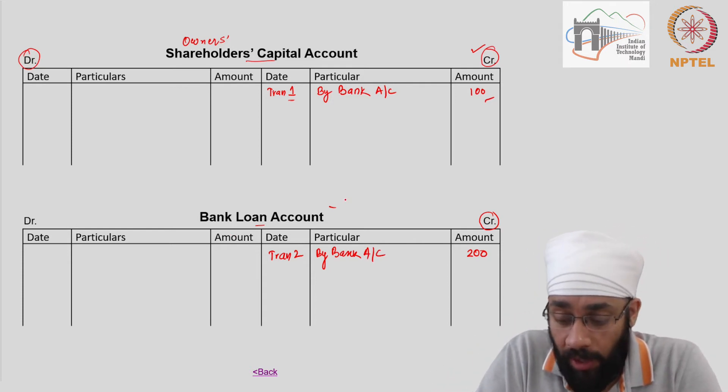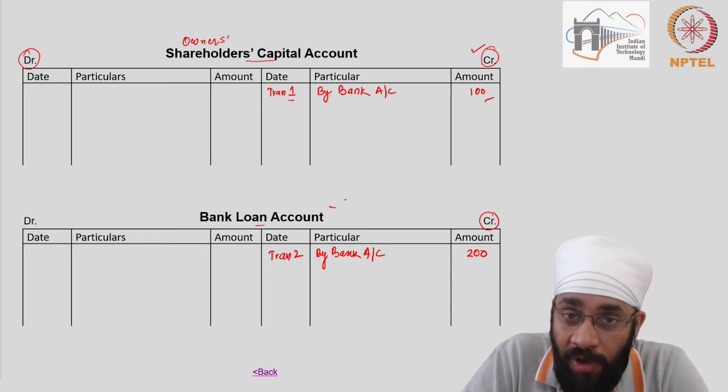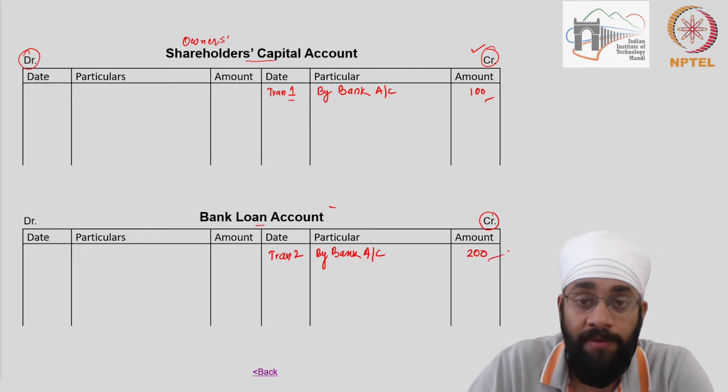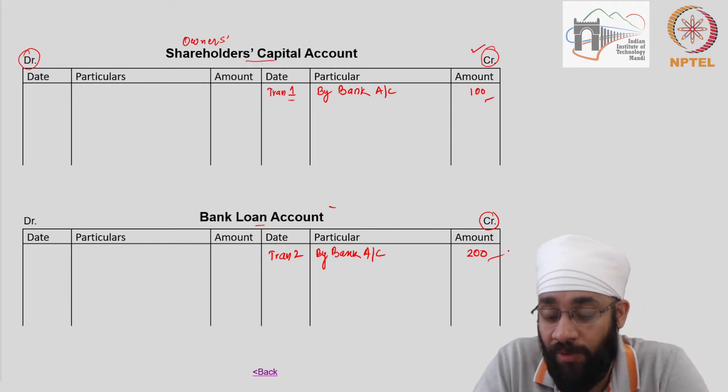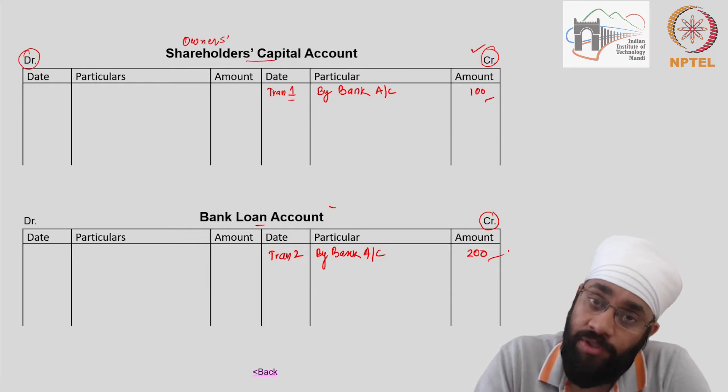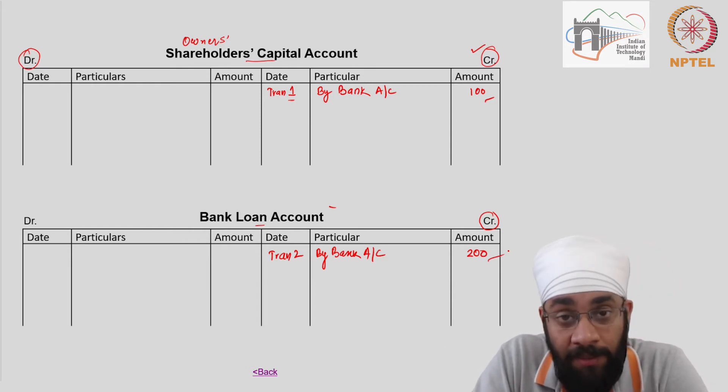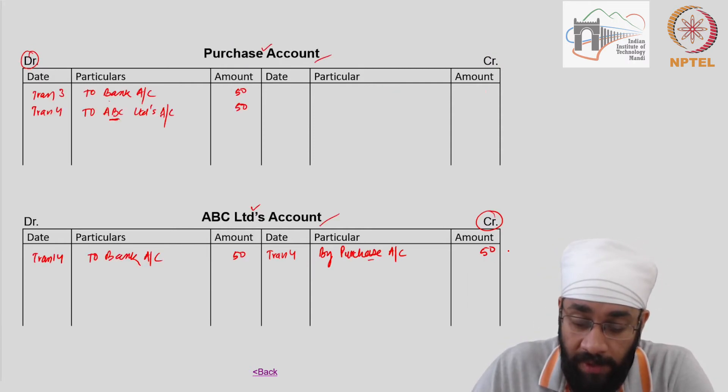You go to bank loan account - what is the loan amount which is pending, how much loan do you have to pay? Well, 200 directly. Now this is only one entry so it seems very obvious, you could do it using the journal entries also, but if there are more transactions - you have paid some EMIs, some interest as well - then things become a little more complicated.